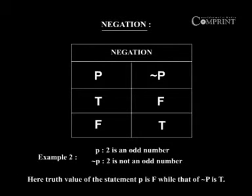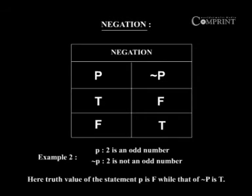Example 2: P — '2 is an odd number.' Negation of p — '2 is not an odd number.' Here the truth value of statement p is false, while that of the negation is true.